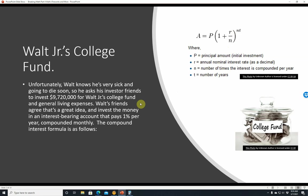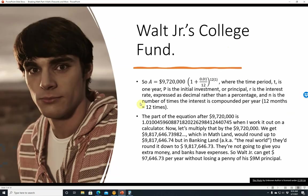So let's put the numbers into the equation. A is equal to $9,720,000 times 1 plus 0.01 — that's 1% — over 12. And then it's going to be times 12, the number of months per year, times the number of years, which is 1. T is 1 year, P is the initial investment or principal — $9,720,000 — R is the interest rate, 1%, and 12 of course is the number of months in a year.